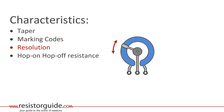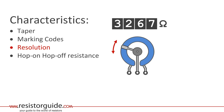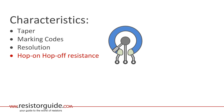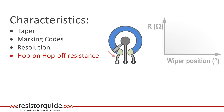If we turn the wiper, the value changes. The smallest possible change we can measure is called the resolution. An example of a good resolution are conductive plastic potentiometers, while wire wound has often less resolution. Also the wiper design influences the resolution. On the ends of the resistor, low resistance metal parts are connected. When the wiper enters these parts, there will be a jump in resistance. This is called the hop-on or hop-off resistance.